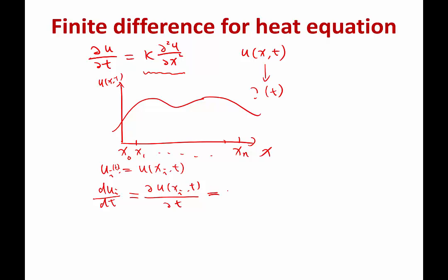By the PDE, this is equal to kappa times the second order derivative of u at this xi and t. So the question is now what? How do we approximate this as a function of ui, probably ui minus 1, ui plus 1, and etc., right? How do we write this as a function of these u's?